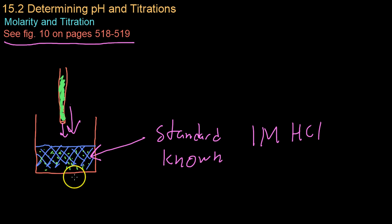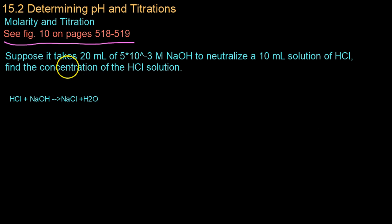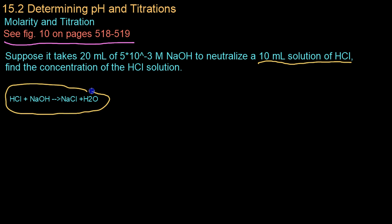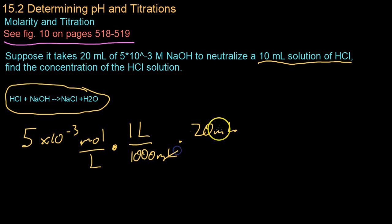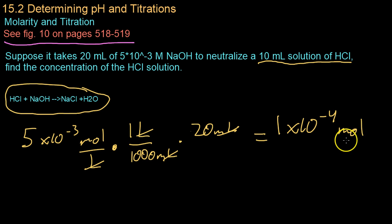Now we'll run through a few calculations about figuring out the concentration of a mystery solution. We're given 20 milliliters of 5×10⁻³ molar sodium hydroxide to neutralize 10 milliliters of some concentrated solution of hydrochloric acid, and we have to find the concentration of that solution. You start off with your reaction equation, then calculate the moles of hydroxide used: 5×10⁻³ mol/L × (1 L / 1000 mL) × 20 mL, canceling units, gives 1×10⁻⁴ moles of NaOH used.